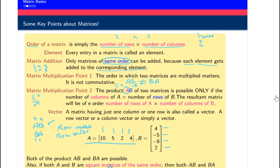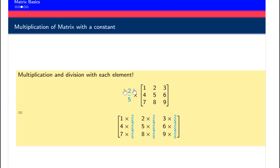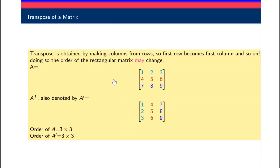Similarly, if a matrix has only one column, it is called a column matrix or column vector. A row vector and a column vector can be multiplied in both directions. Other than that, if both matrices are square matrices of the same order — for example, both three by three — then both can be multiplied in both directions. Also, if you multiply a matrix by a constant value, that constant is multiplied with each and every element of the matrix.